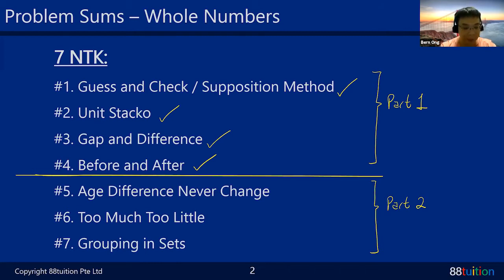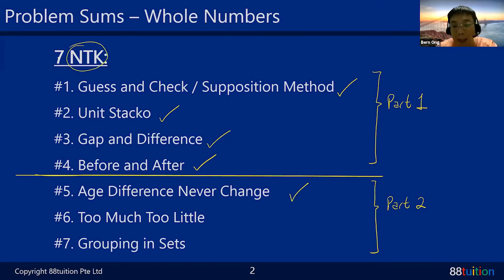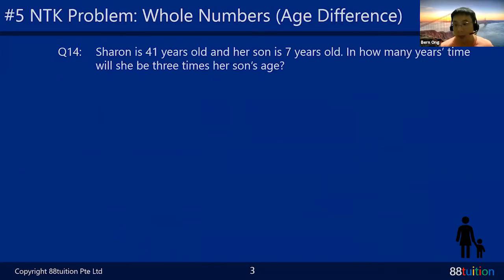The first thing we are going to talk about today is number five. NTK stands for 'need to know.' Number five is talking about the concept that age difference never changes. This is very important — you all must understand something called age difference never change.